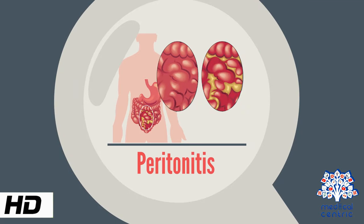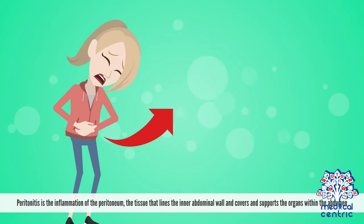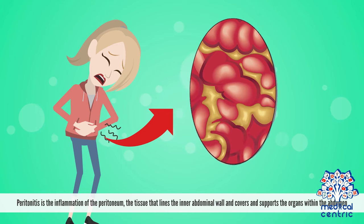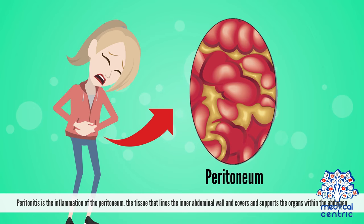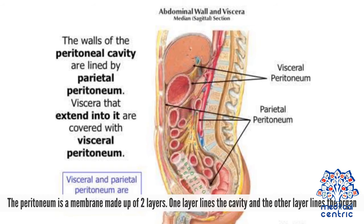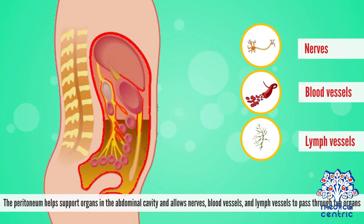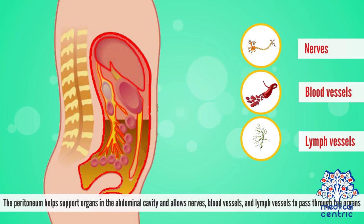Today's topic is peritonitis. Peritonitis is the inflammation of the peritoneum, the tissue that lines the inner abdominal wall and covers and supports the organs within the abdomen. The peritoneum is a membrane made up of two layers. One layer lines the cavity and the other layer lines the organ. The peritoneum helps support organs in the abdominal cavity and allows nerves, blood vessels, and lymph vessels to pass through the organs.